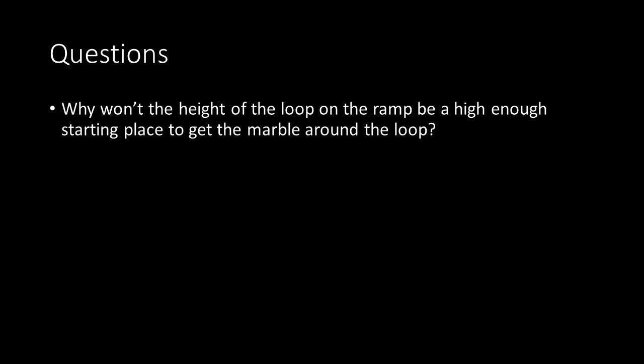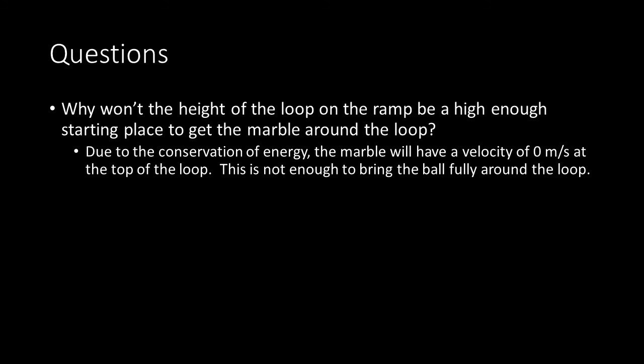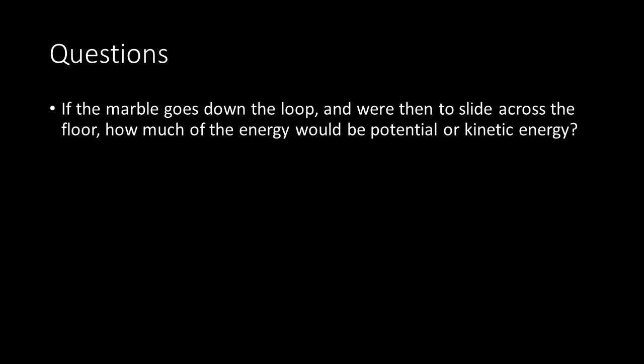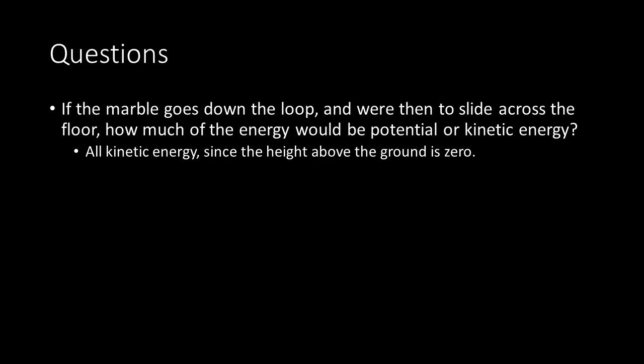Let's go through a couple of questions. Why won't the height of the loop be a high enough starting point to get the marble around the loop? Due to conservation of energy, the marble will have a velocity of 0 m/s at the top of the loop, which is not enough to bring it fully around — see the derivation in the previous slides. If the marble goes down the loop and slides across the floor, how much of the energy would be potential or kinetic? All kinetic energy, since the height above the ground is zero and it is traveling at a velocity.